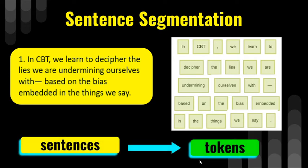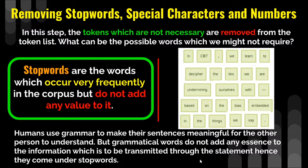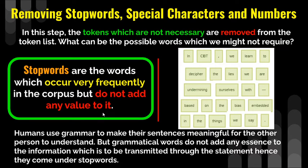The next step is removing stop words, special characters, and numbers. After getting tokens, it is necessary to remove the unnecessary tokens from the token list. We need to remove tokens that are not required to keep the essence of the information, in order to normalize and simplify the text further. Stop words are actually words - not symbols, not numbers. Stop words are the words which occur very frequently in the corpus but do not add any value to it. This is the definition of stop words and it is very important.